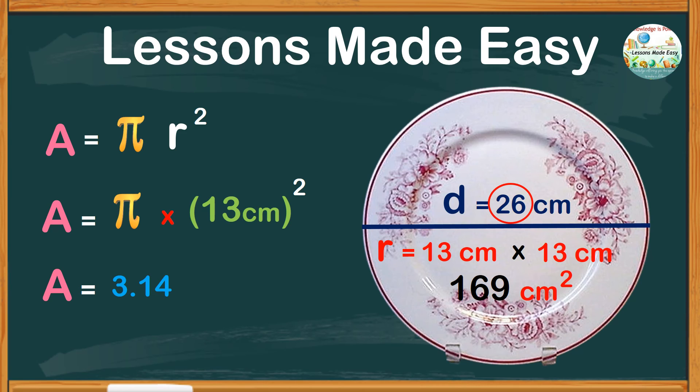The product is 530.66, and so our final answer would be area equals 530.66 square centimeters.